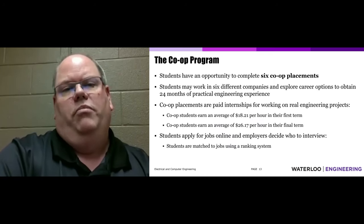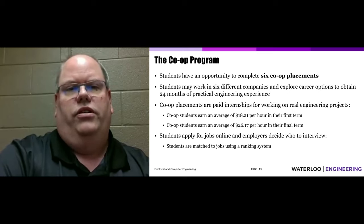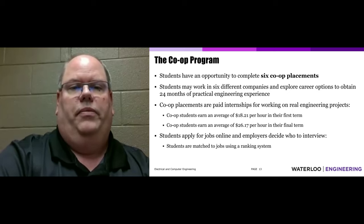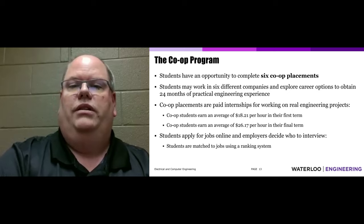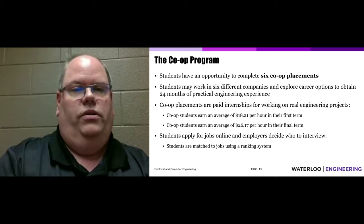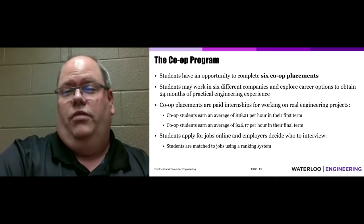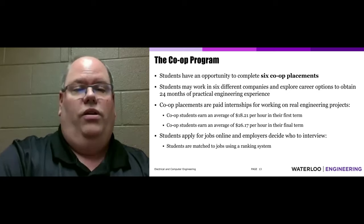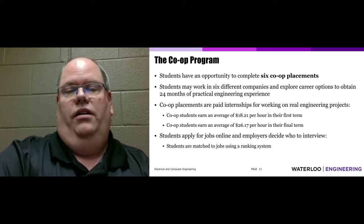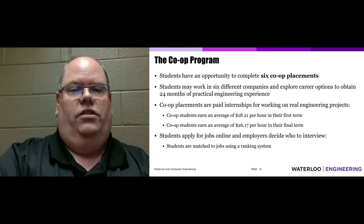The co-op program is why most students come to the University of Waterloo. Electrical and computer engineering students are required to complete it — you have the opportunity to complete six co-op placements and must successfully complete five to receive your degree. This means working at six different companies, exploring career options, and obtaining 24 months of practical engineering experience. This is not a summer job; this is a real engineering placement where you work on real engineering projects, often involved with products that launch to market.